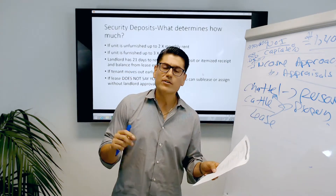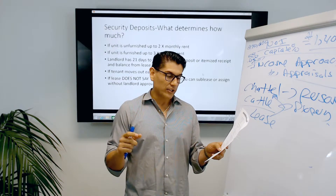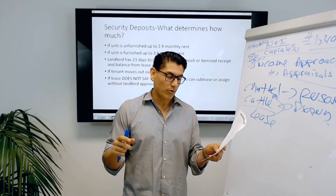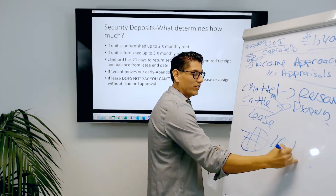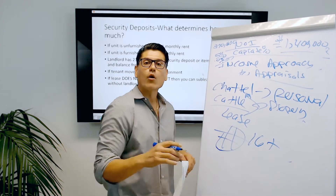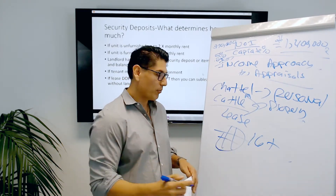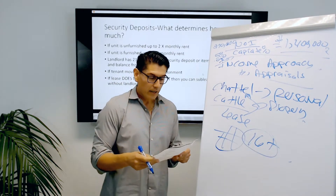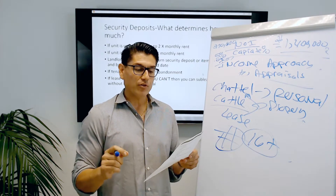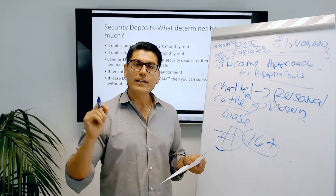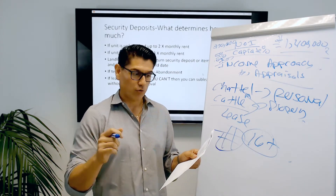Number seven is a statement of fact: a resident live-in apartment manager is required for any building with 16 or more units. So a large apartment complex with 16 or more units requires a live-in manager. Number eight: a landlord must return a security deposit or itemized receipt within how many days of terminating a lease? 21 days — answer delta.